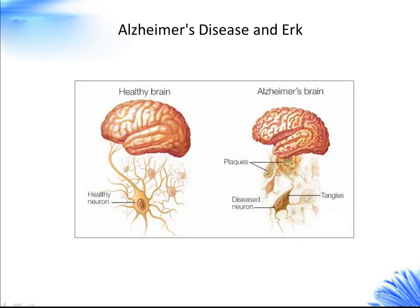Alzheimer's disease (AD) is a neurodegenerative disease characterized by cognitive and memory dysfunction, thought to result from the formation of senile plaques containing amyloid-beta and neurofibrillary tangles containing the microtubule-associated protein Tau in the brain. Studies suggest that MAPK signaling pathways may take part in the pathogenesis of AD through the regulation of neuronal apoptosis, beta- and gamma-secretase activity, and phosphorylation of APP and Tau.